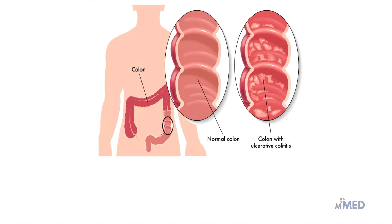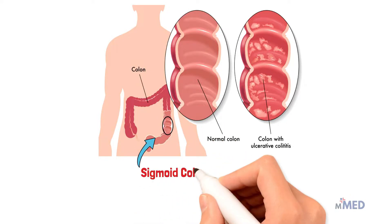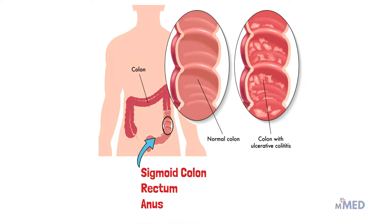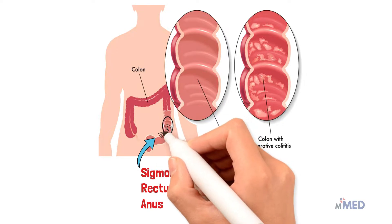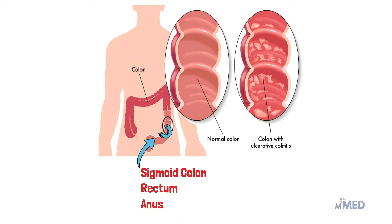Ulcerative colitis is characterized by recurring episodes of inflammation limited to the mucosal layer of the colon. While Crohn's disease can affect any part of the intestines, ulcerative colitis only affects the sigmoid colon, the rectum, and the anus. Ulcerative colitis almost always involves the rectum and spreads proximally from the rectum in a continuous pattern up the colon.